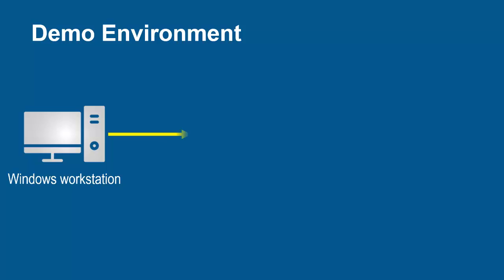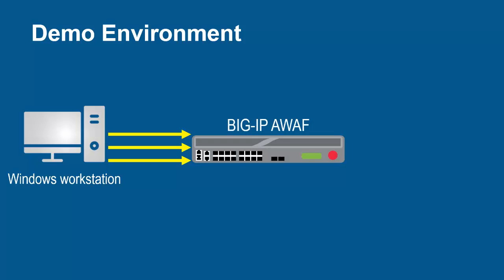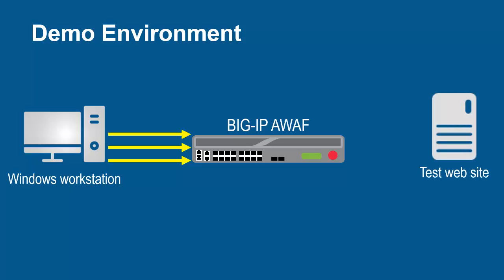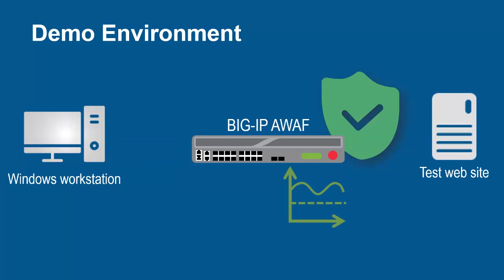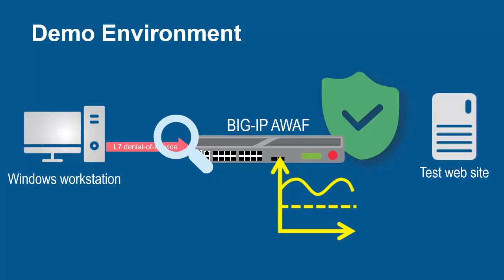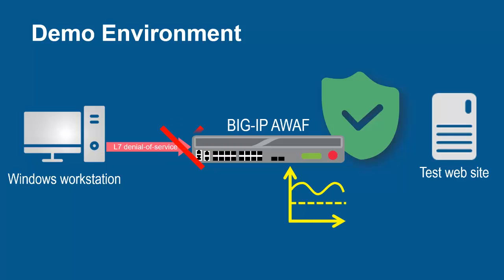The environment for this demo contains 3 devices. A Windows workstation will be used to submit legitimate client requests for the web application. These requests will arrive at the F5 BIG-IP system running Advanced WAF, which sits in front of and protects the back-end web application. Using its full proxy architecture, BIG-IP examines every request before sending them to the back-end web server. Through this process, BIG-IP Advanced WAF creates a baseline of expected user traffic. The workstation will then launch a layer 7 denial of service attack, and BIG-IP will compare requests to the baseline, blocking all matching denial of service requests.